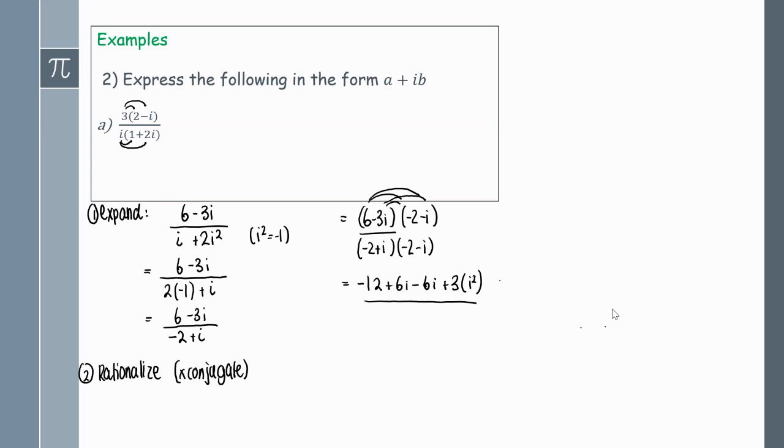On the denominator, the middle two terms will cancel out in our FOIL process, so we'll just be left with minus 2 times minus 2 which is 4, and then the i times minus i which is minus i squared.